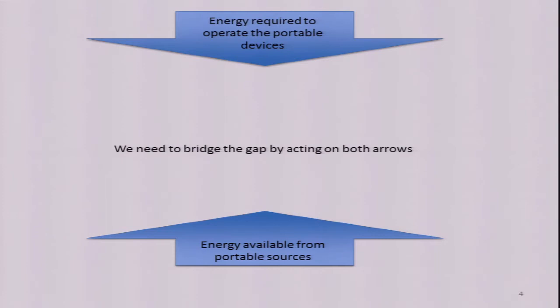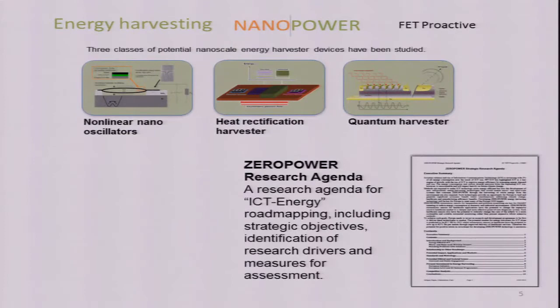In order to make this wireless sensor available, we need to bridge the gap by acting on both arrows. This is something that we understood not exactly at the beginning, but still the gap is too large in order that we can make available such devices. So we started working on the lower arrow.